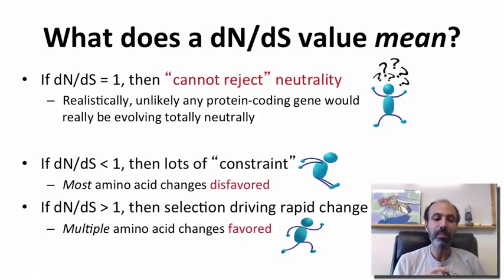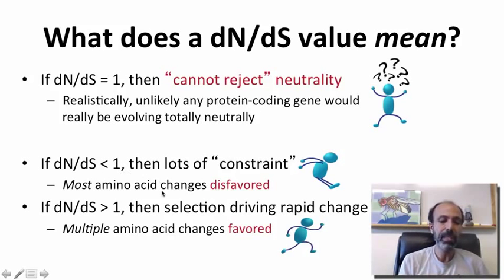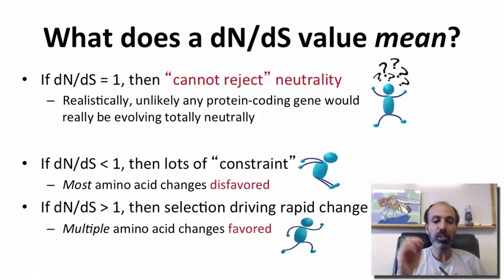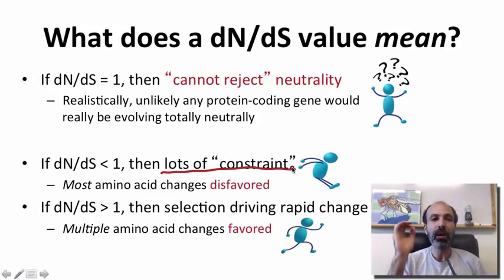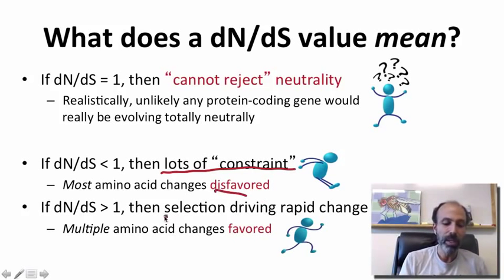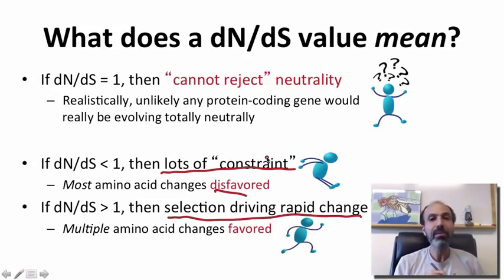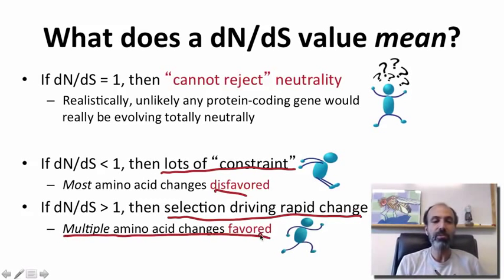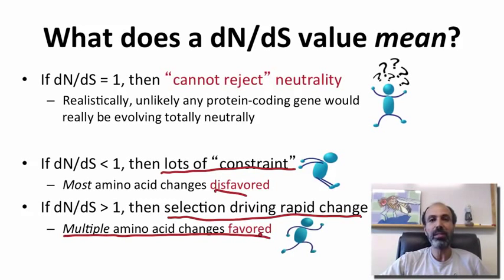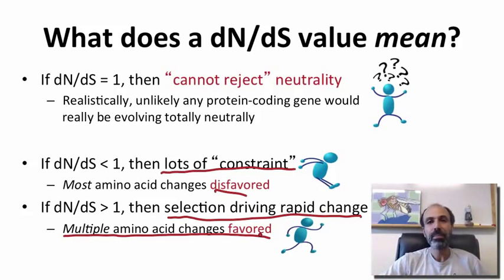When you have both constraint and rapid evolution together, your dN/dS value takes an average across the whole gene, making it hard to tell what's going on. Some researchers break up the gene and look at sections independently. Essentially, if you have a dN/dS value of 1, that doesn't mean the gene is actually evolving neutrally — it means you cannot reject neutrality. If dN/dS is less than 1, you may still have some adaptive changes but importantly lots of constraint. If dN/dS is greater than 1, you definitely have selection driving rapid change.